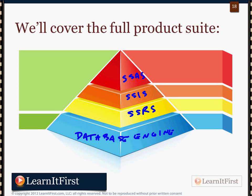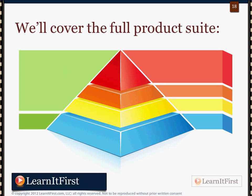You can actually group these together — the top three: Reporting Services, Integration Services, and Analysis Services — would be the BI part of SQL Server, Business Intelligence. More on that later — just for those of you that already know.